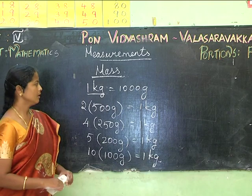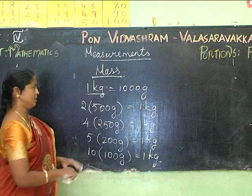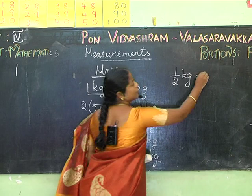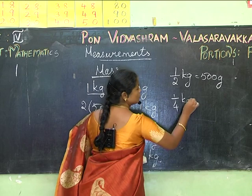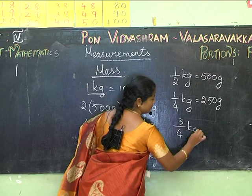Now, what is half a kg? Half a kg means half of 1000, that is 500 grams. One quarter kg equals 250 grams. And three quarters of a kg is 750 grams.